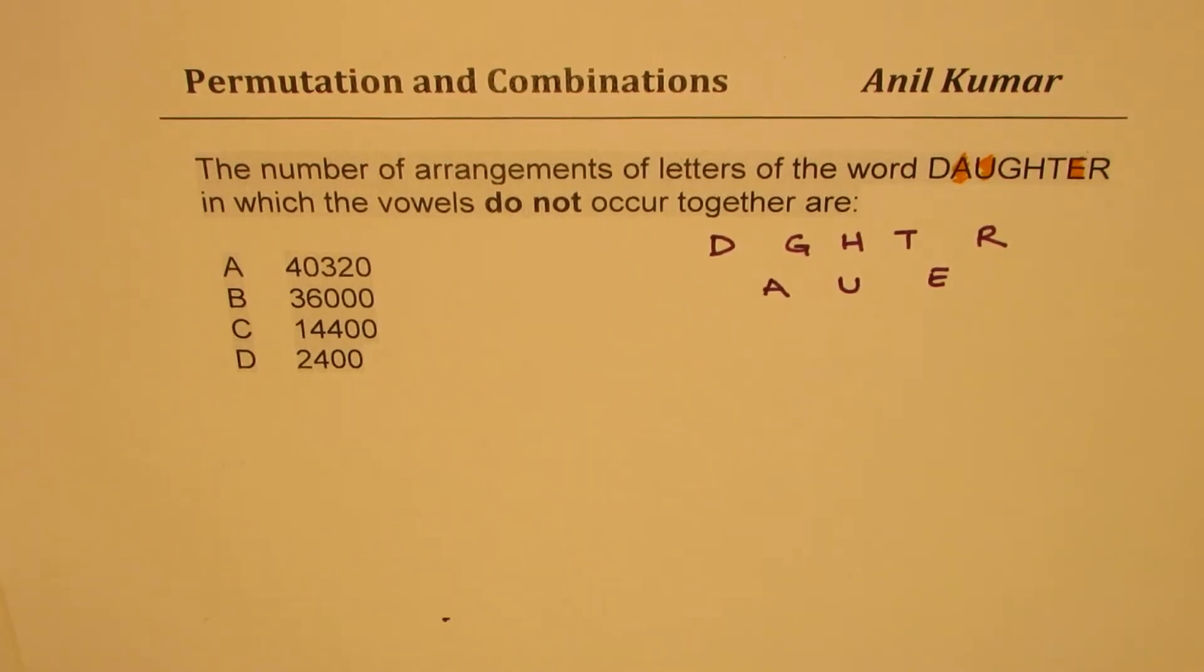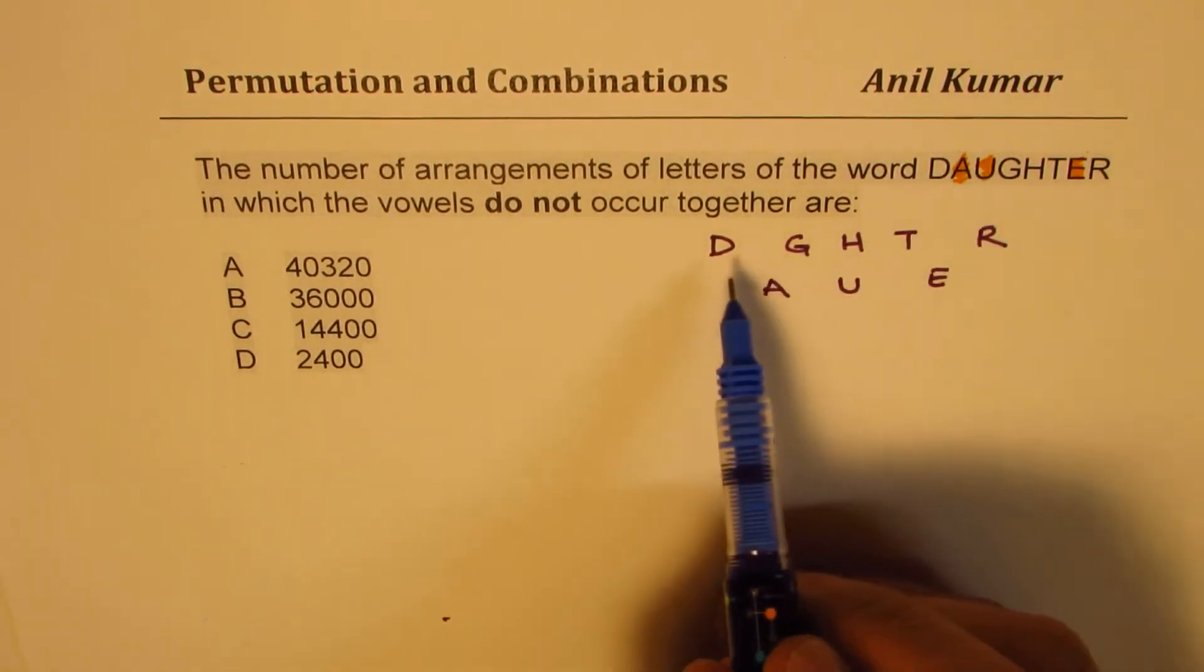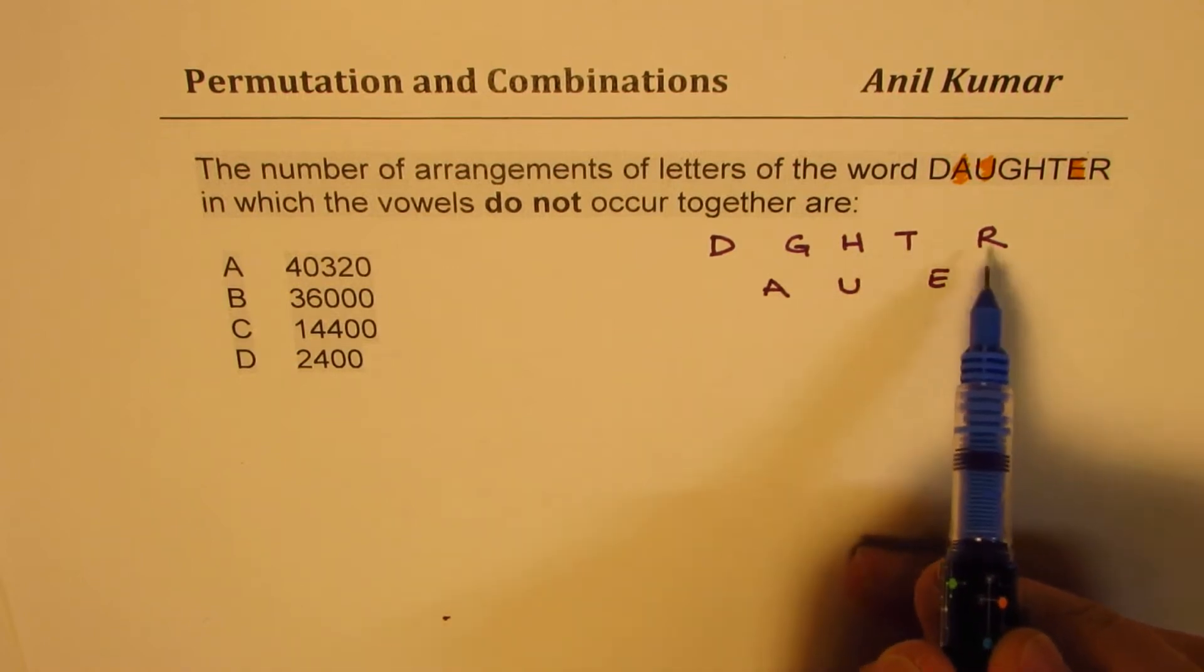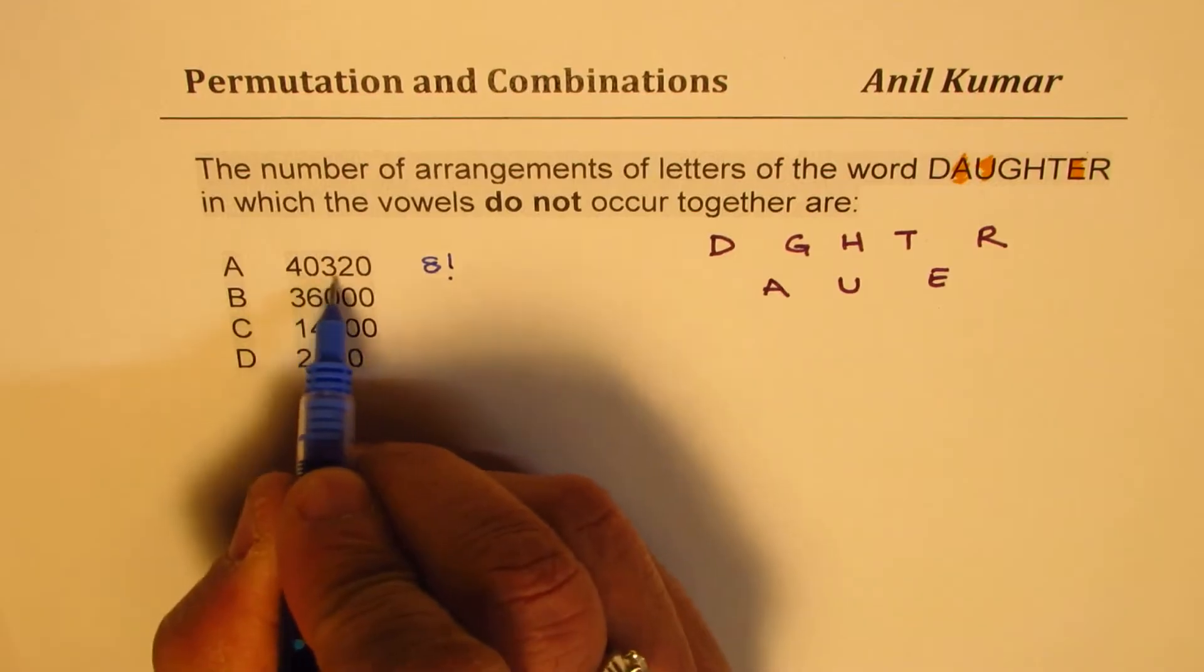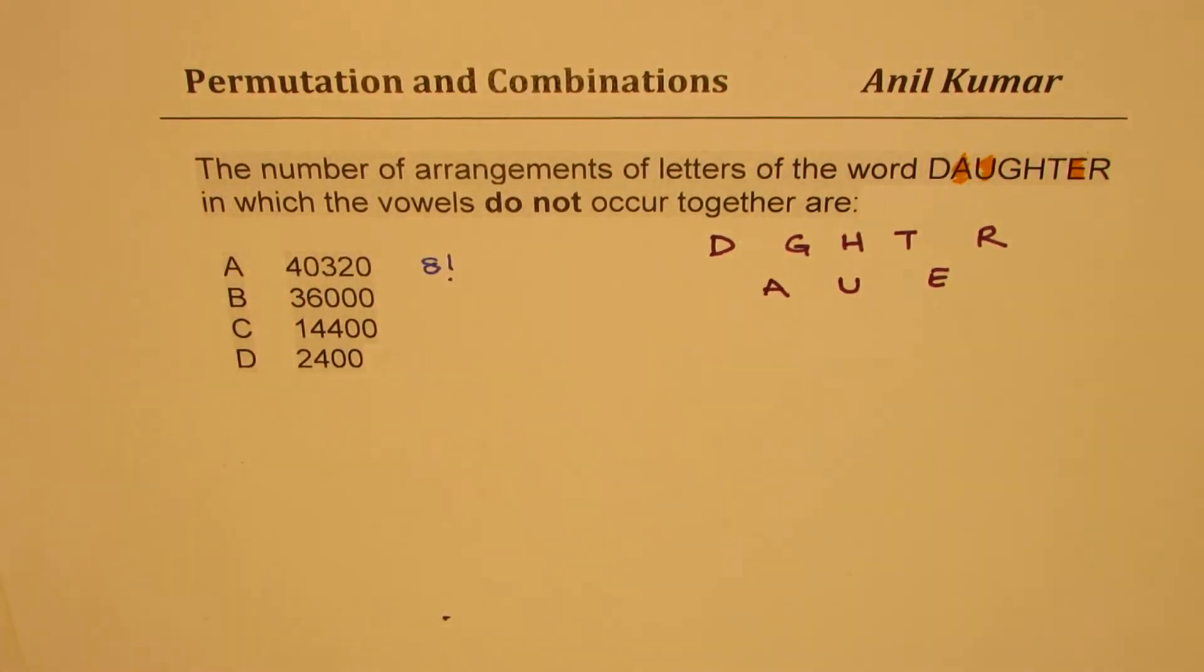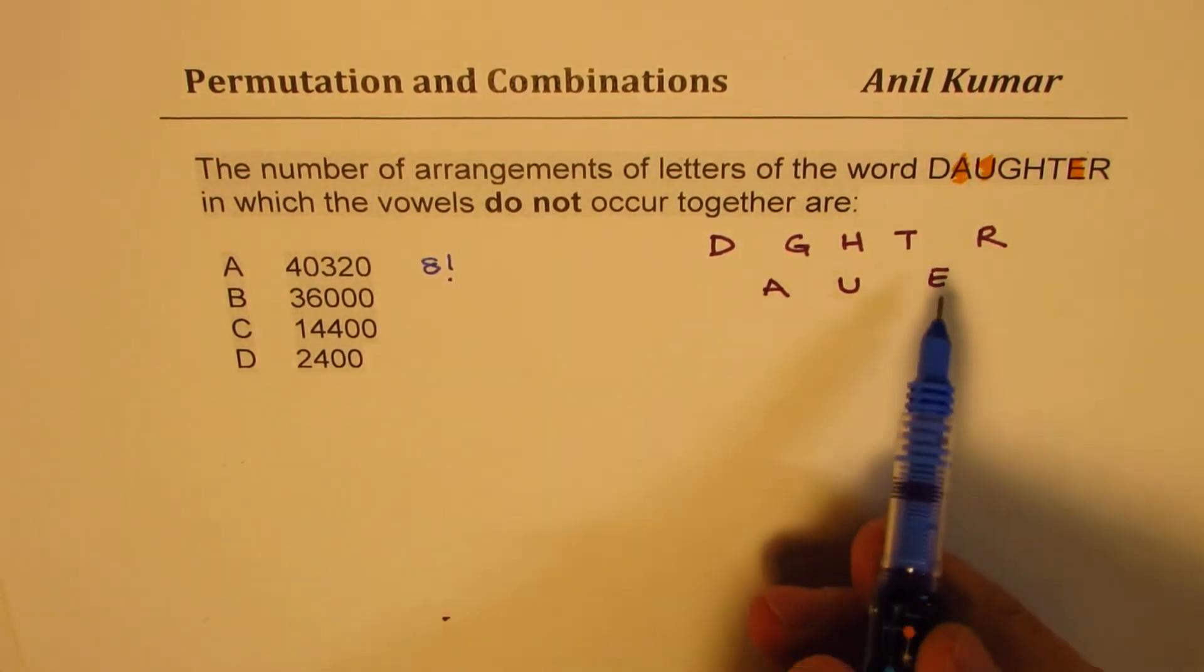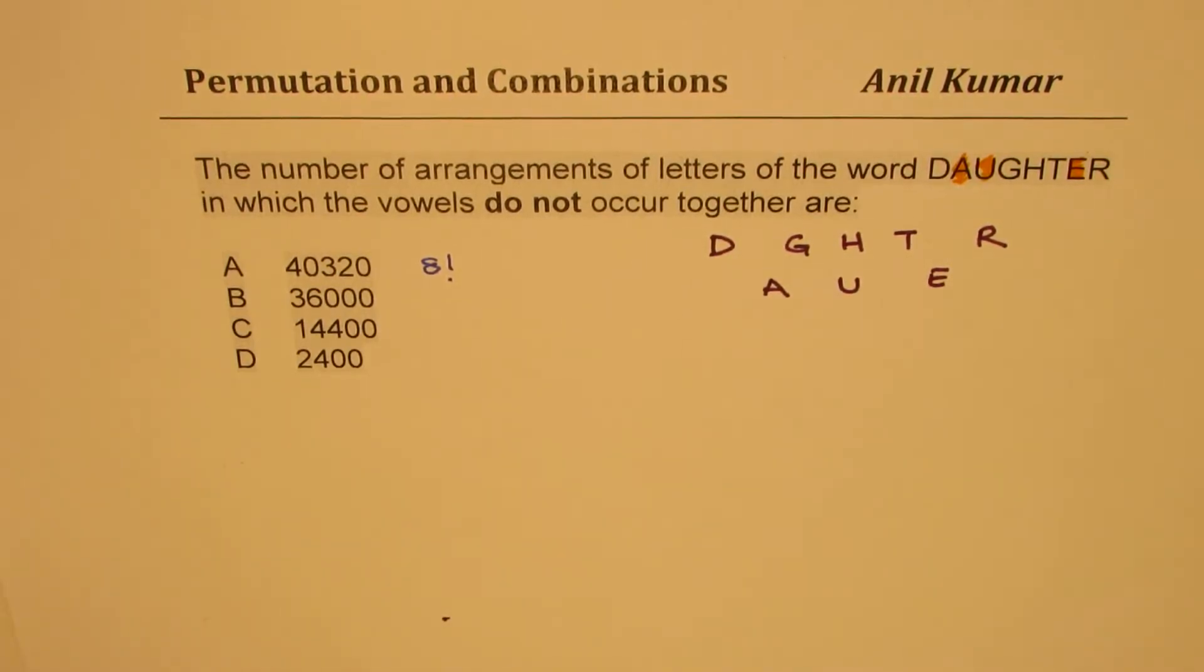Now let me discuss how we end up getting wrong answers. Some students will say, well, there are 8 letters, so the answer is 8 factorial, which is 40,320. Well, definitely not. These are definitely the total number of ways in which you can arrange these 8 letters.